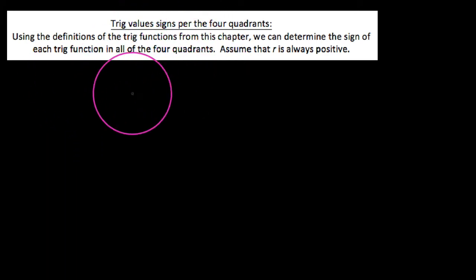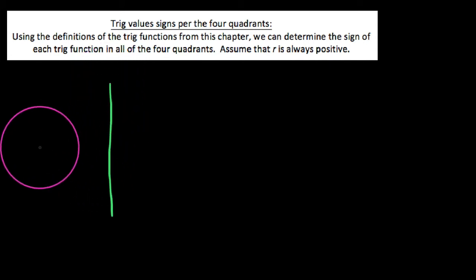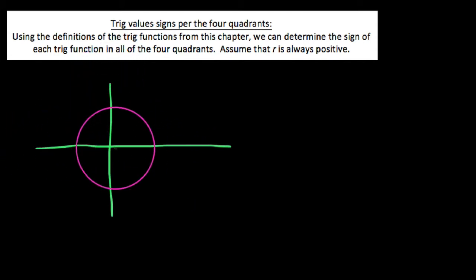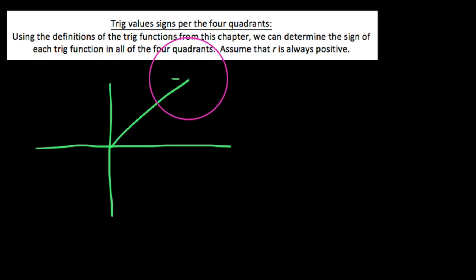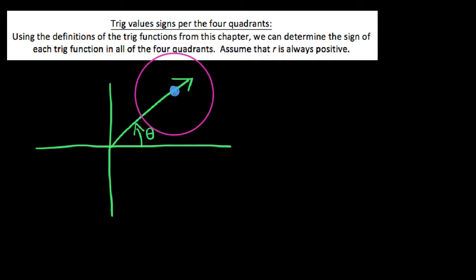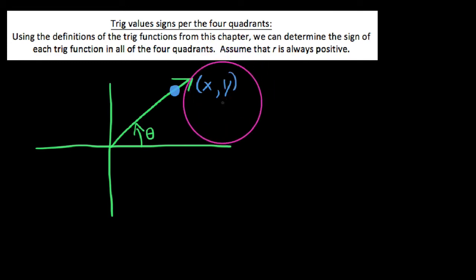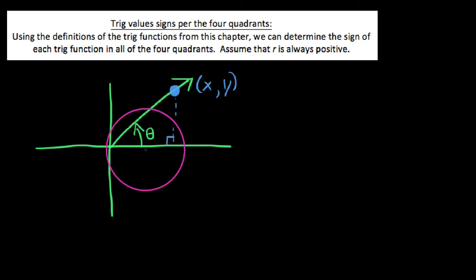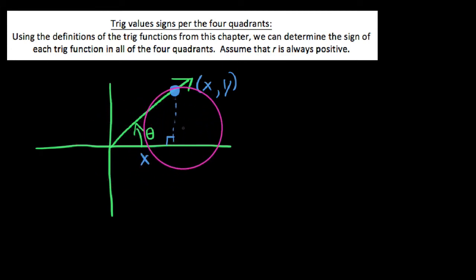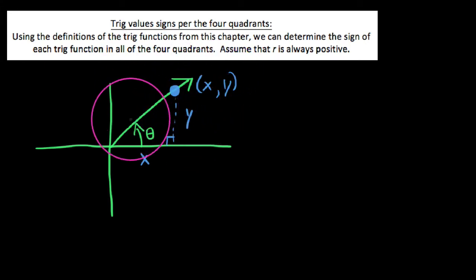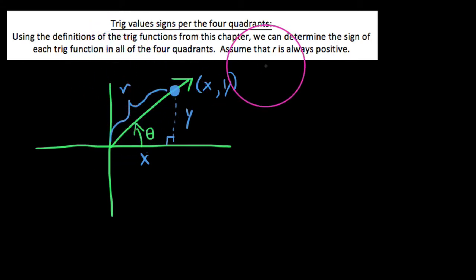Recall that when we redefine the trig functions, we say given some angle in standard position — meaning it leaves the positive x-axis and terminates in some quadrant — we have some angle theta. We can find all six trig functions so long as we know a point on the terminal side. We say some point (x, y), because we can always drop down an altitude and create a right triangle. The bottom leg is exactly x units to the right, the vertical leg is y units up to the point, and we define the distance back to the origin as r.